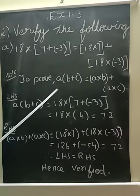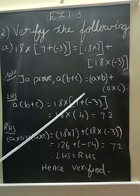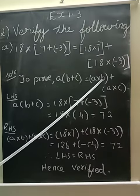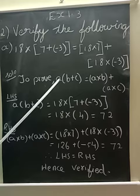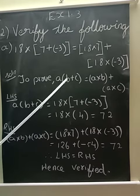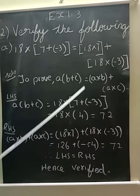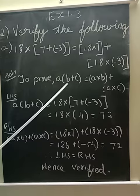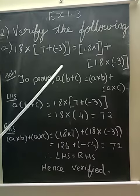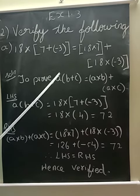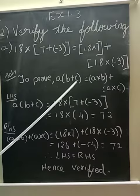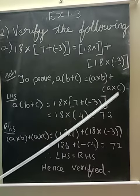It is A into B plus C is equal to A into B plus A into C. See, A of B plus C is equal to A into B plus A into C. I am multiplying A here and then again here.